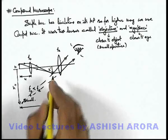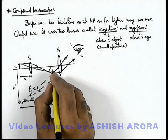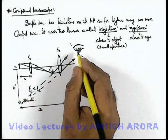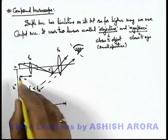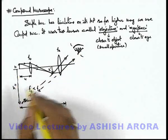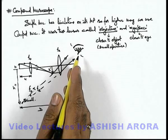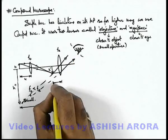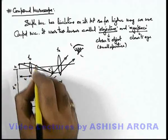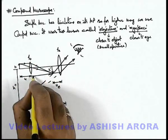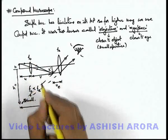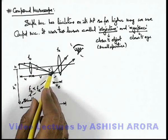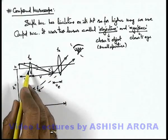It is also possible that the final image is produced at infinity, in which case the eye will be able to see the final image which is highly magnified and in a relaxed state. Now, let the object distance for the eyepiece be u_e, and the image distance from the objective lens be v.